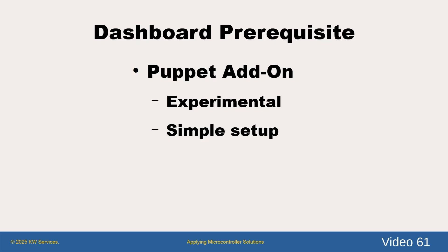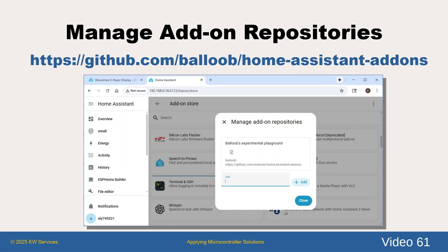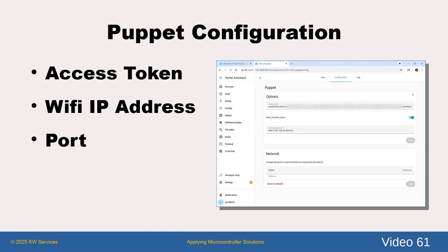Now let's shift to the dashboard method. We begin by installing the add-on called Puppet. Please be aware that the webpage states that this is an experimental feature. To do this, you need to first add the link via the three dots in the upper right-hand of the online store webpage to set it up as a repository item. After installing the Puppet add-on, you need to configure it.